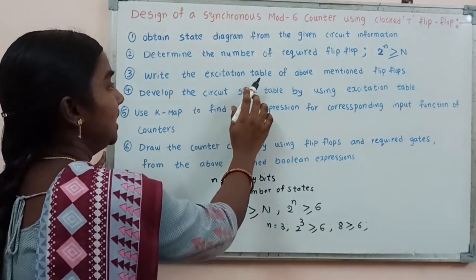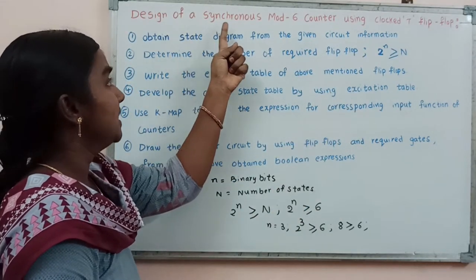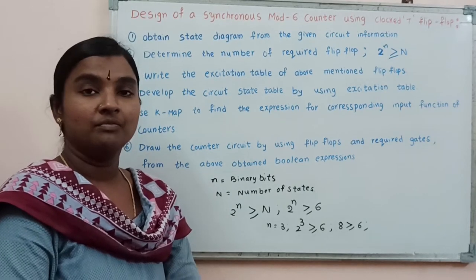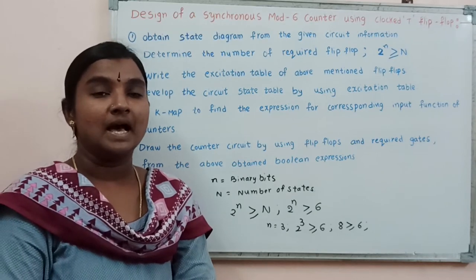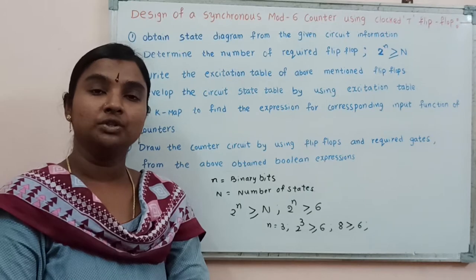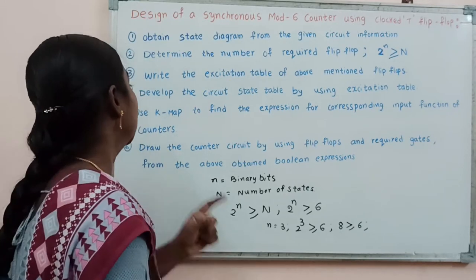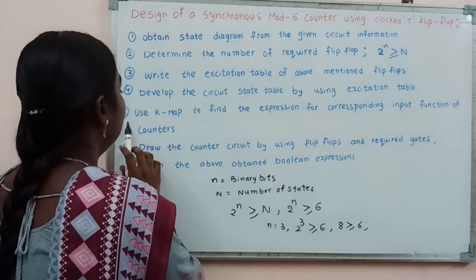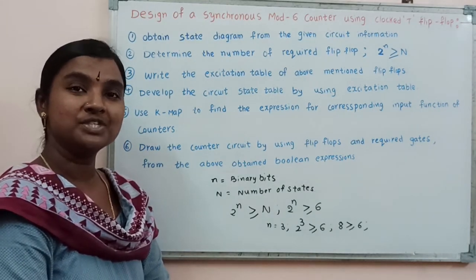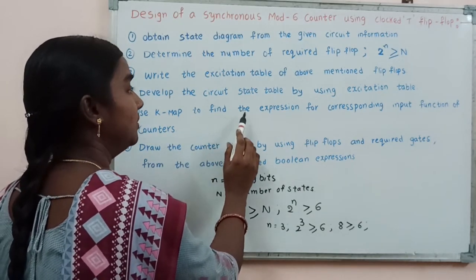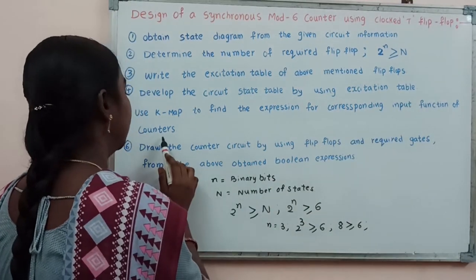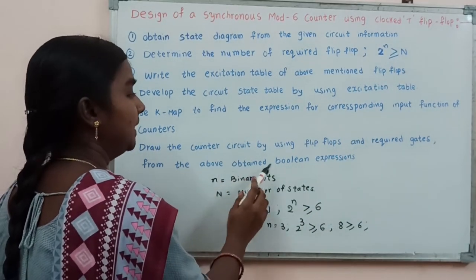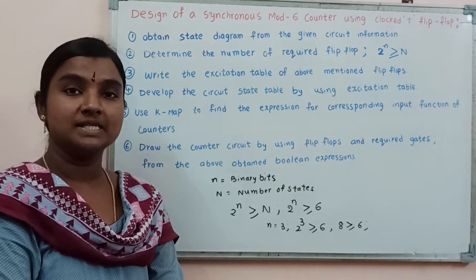The third step is to write the excitation table of the flip flops. In this design we use T flip flops, and the excitation table for T flip flops is needed. The fourth step is to develop the circuit state table using the excitation table. The fifth step is to use K-maps to find the Boolean expressions for the corresponding input functions of the counter. The sixth step is to draw the counter circuit using flip flops and required gates from the obtained Boolean expressions.